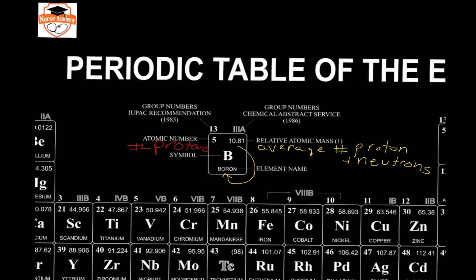As we discussed in the atomic structure video, an isotope is an atom of an element that has different numbers of neutrons. For boron, the majority of boron atoms would be boron-11, so they would have five protons and six neutrons. Then there would be a population of approximately 20% that would be boron-10, so they would have five protons and five neutrons. When you average the atomic mass of this population — about 20% boron-10 and about 80% boron-11 — you end up with an average atomic mass or relative atomic mass of 10.81.